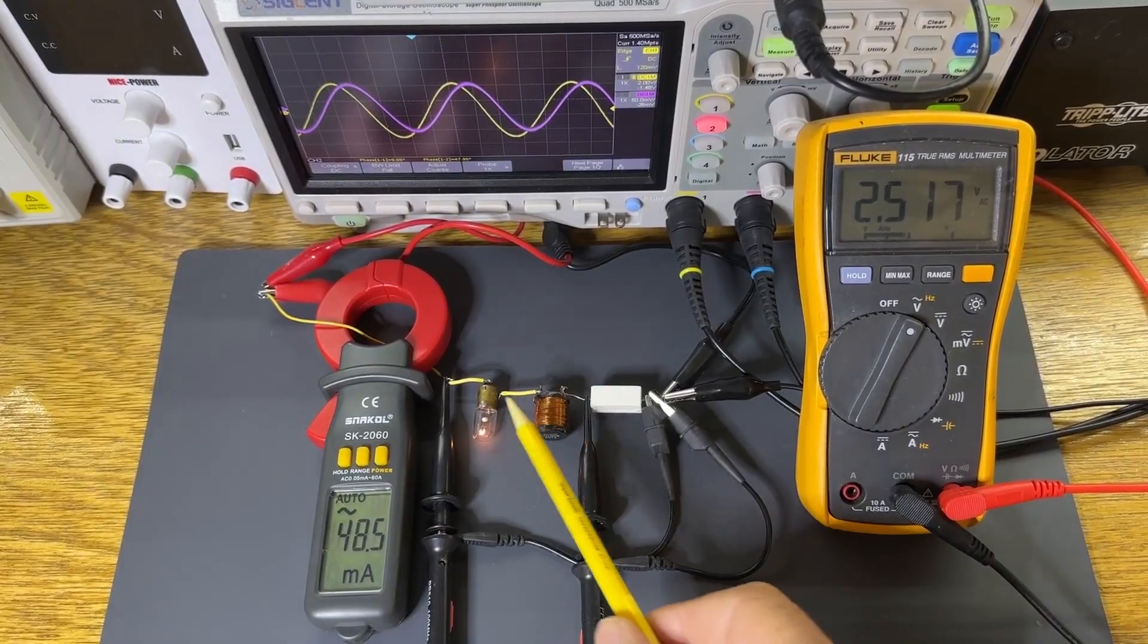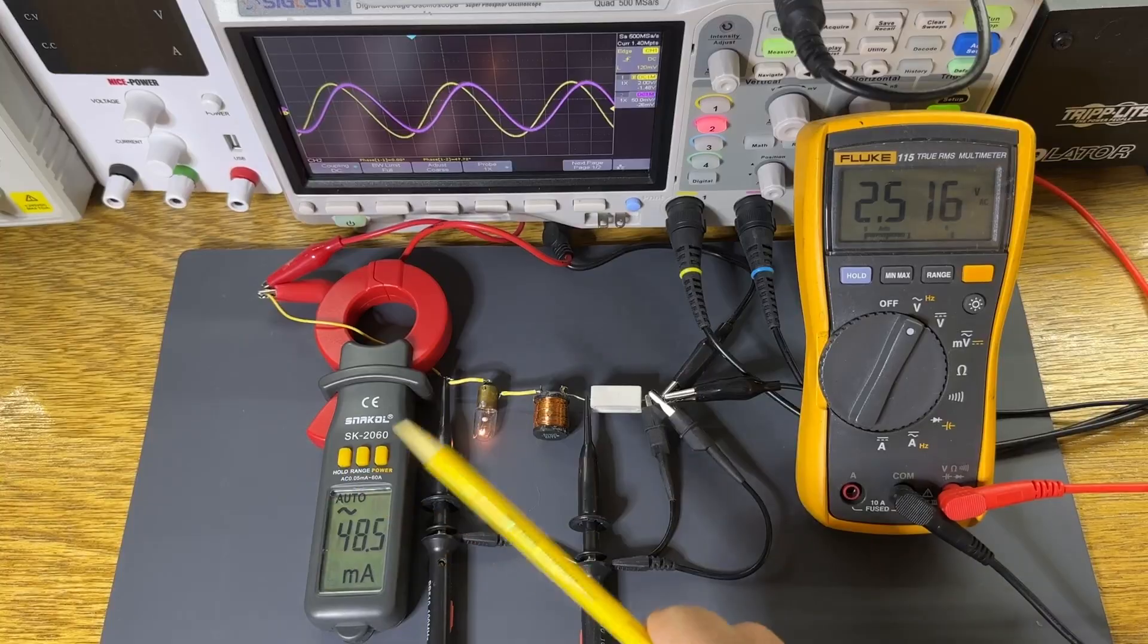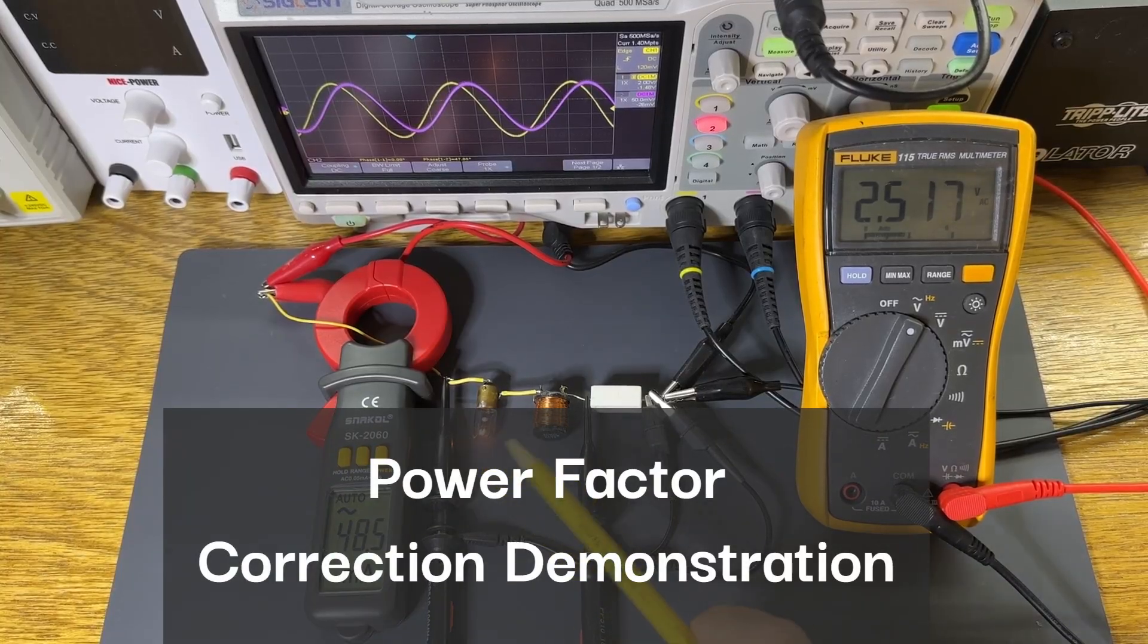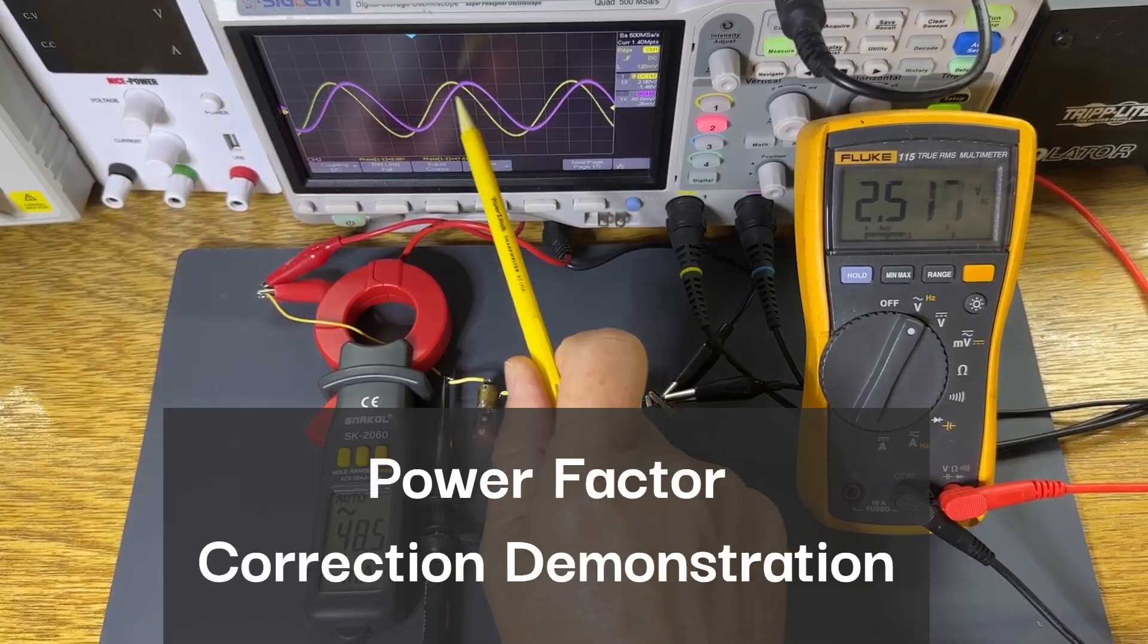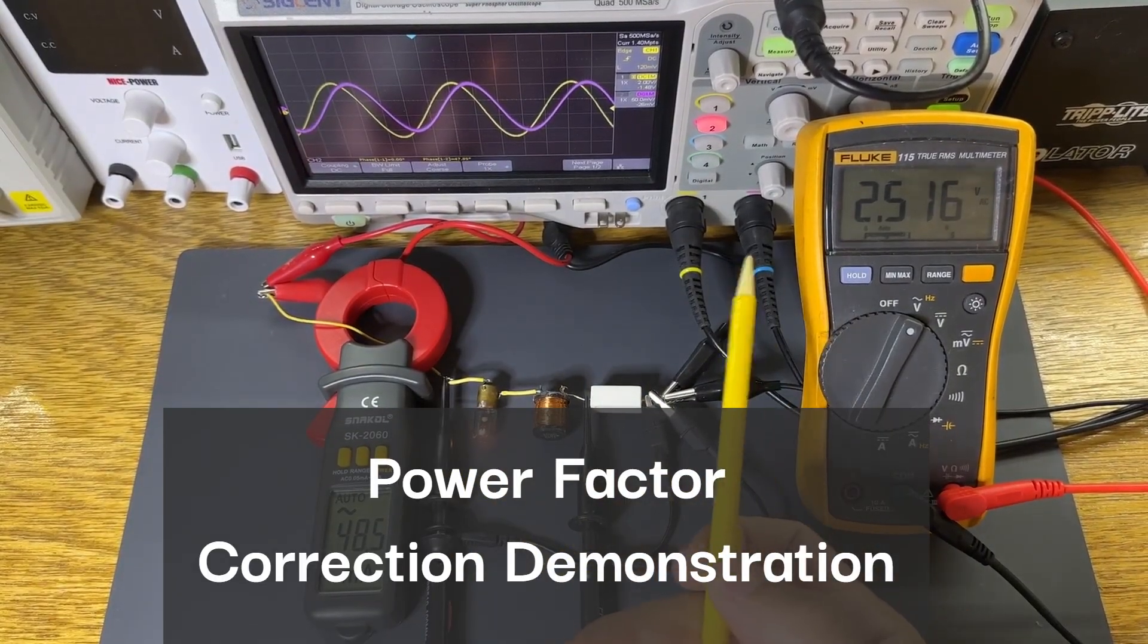We're going to start with an inductor and a light bulb in series, which we'll collectively refer to as our inductive load. We'll then measure how far out of phase the current and voltage are. I'll then explain why this happens and how it affects power factor and the efficiency of the circuit.